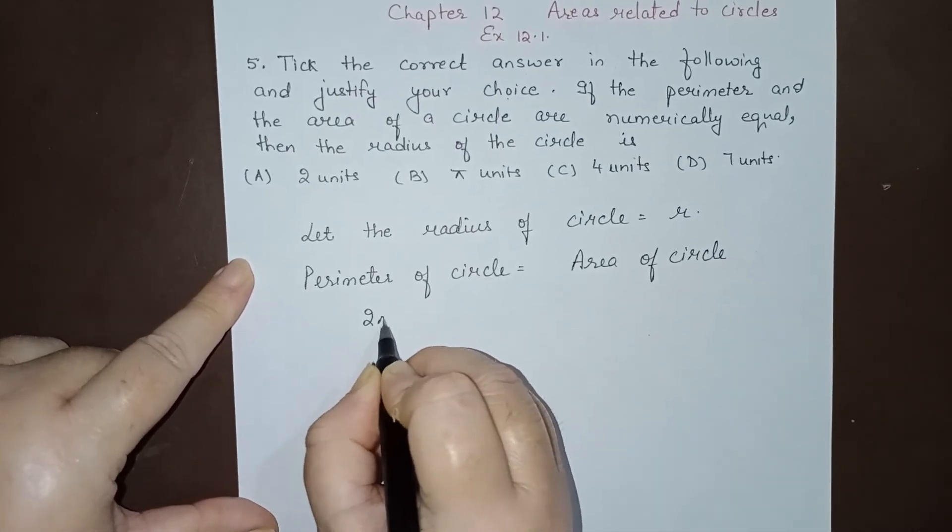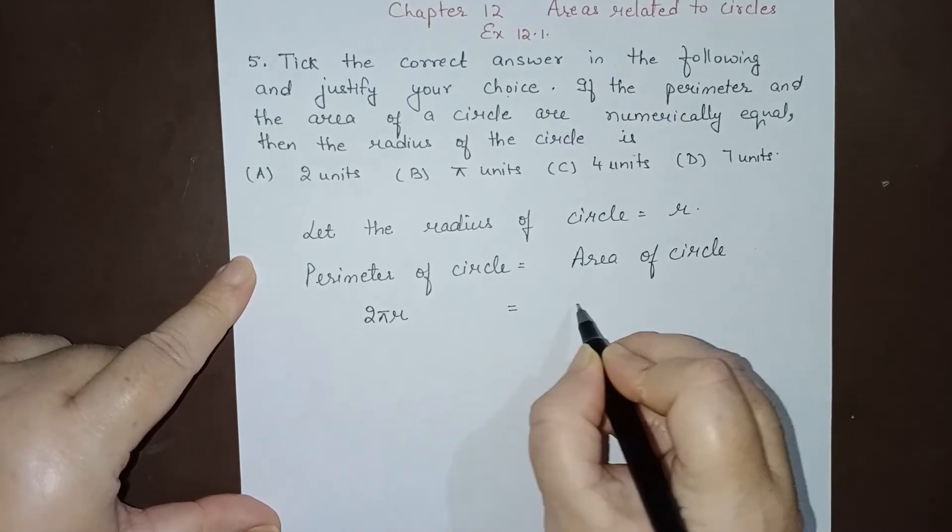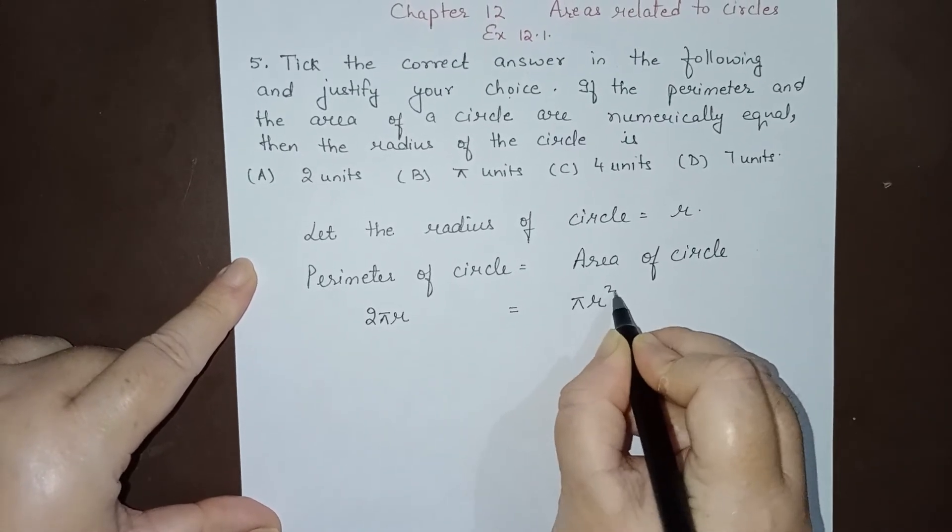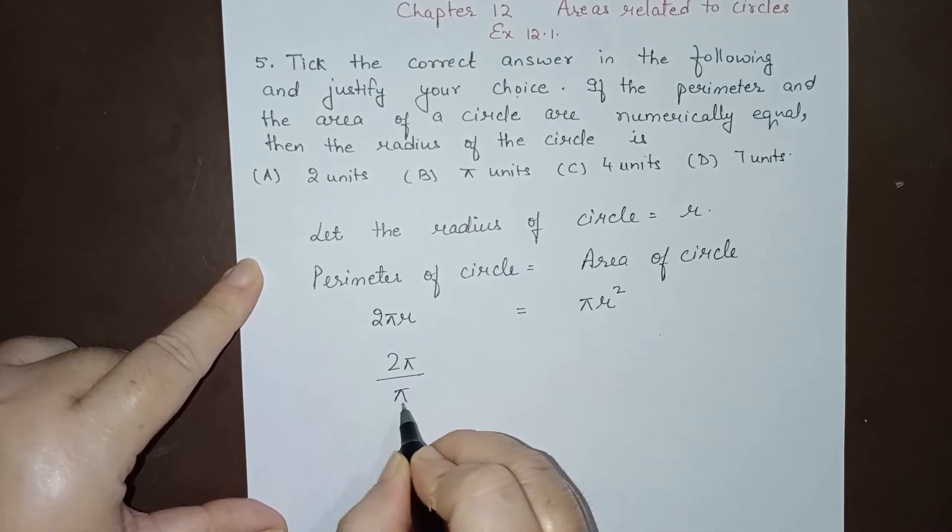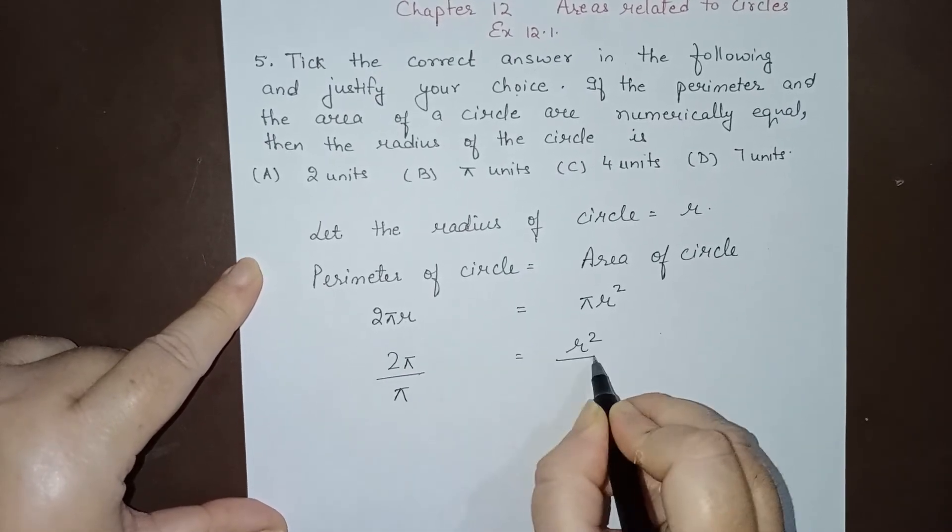perimeter of circle, or the circumference of circle, is given by 2πr. And area of circle is given by πr². So we have 2π over π, this π I am taking here, r² over r.